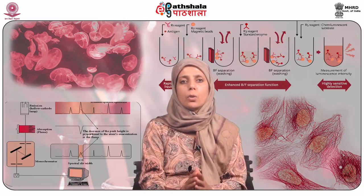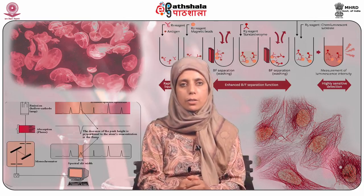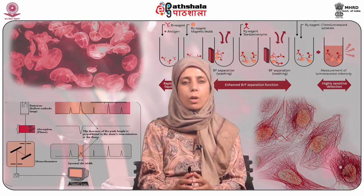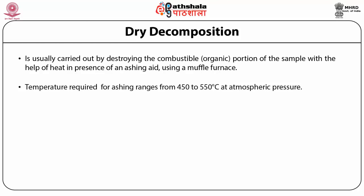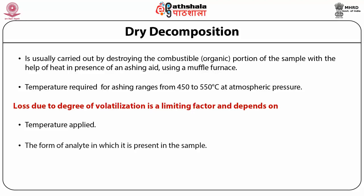For solid samples, two basic procedures are used: dry decomposition and wet decomposition or acid digestion. Dry decomposition, as the name indicates, does not involve any solvent. It is carried out by destroying the combustible or organic portion of the sample using heat in the presence of an ashing aid, usually in a muffle furnace. The temperature used is 450 to 550 degrees centigrade at atmospheric pressure. The loss due to volatilization is a limiting factor and depends on the temperature, the form of the analyte, and the chemical environment in the ashing stage.